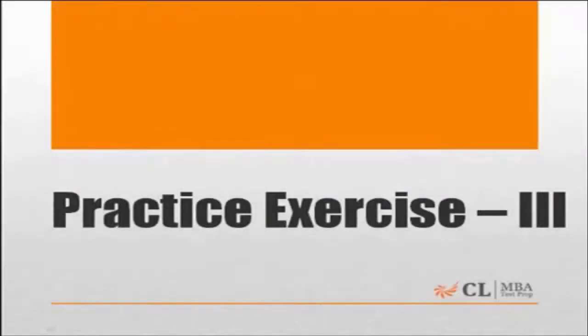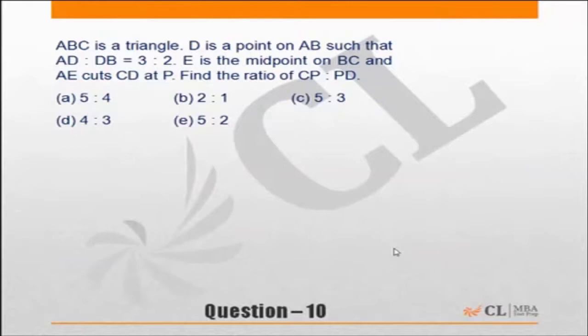Practice exercise 3: ABC is a triangle, D is a point on AB. Let's draw a random triangle ABC, and D is a point on AB such that AD:DB = 3:2.